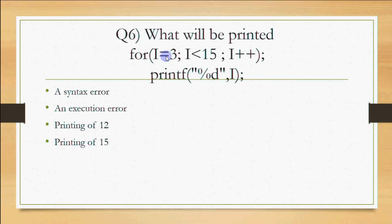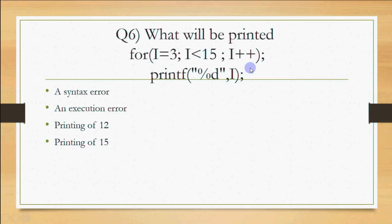The loop starts with i=3. While i<15 is true, the blank statement executes and i increments: 4, 5, 6, 7, 8, 9, 10, 11, 12, 13, 14. When i becomes 15, the condition 15<15 is false and the loop ends. The next statement is printf("%d", i), which prints 15. So the answer is 15 is printed once.